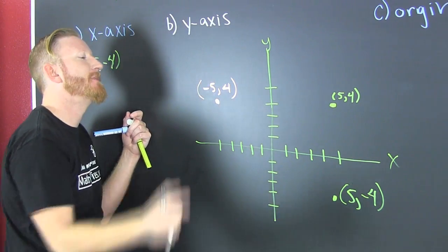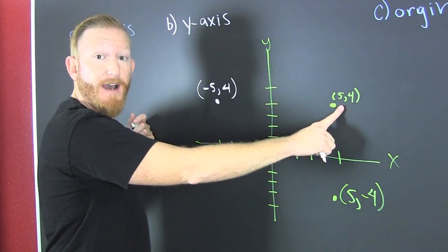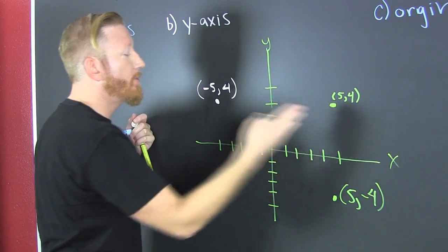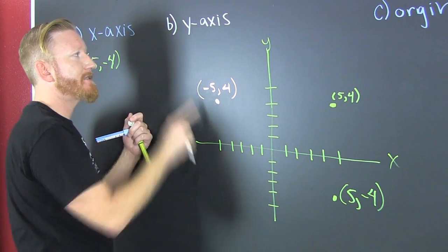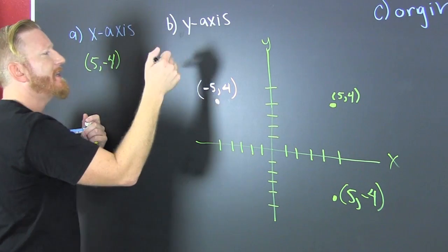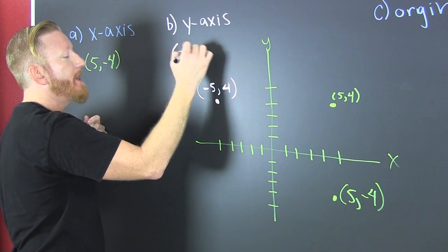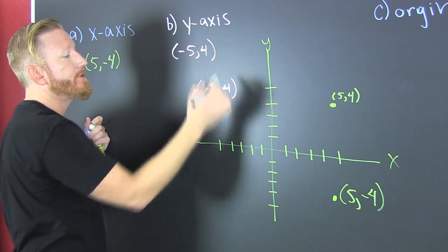So what do I do? I make the 5 negative. It has the same y, but I reflect it across the y-axis to get y-symmetry. And that's y. My point is minus 5, 4, sure.